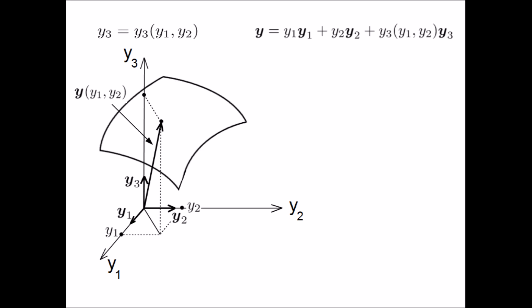This type of description is called extrinsic because it involves coordinates that are external to the surface.